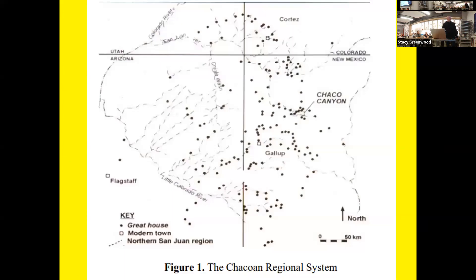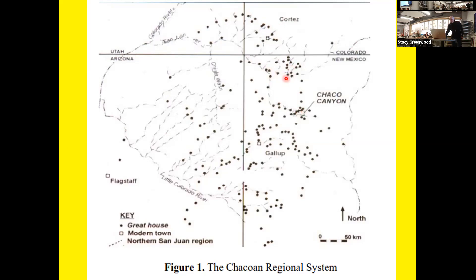This is a map of the Chacoan regional system, basically the four corners area — New Mexico, Arizona, Utah, and Colorado. Cortez is up here, Durango's over here, Chaco Canyon's down here, and Aztec is right up here along the San Juan River.